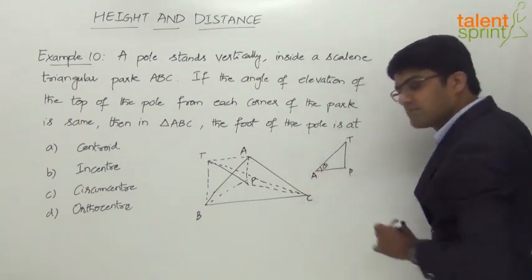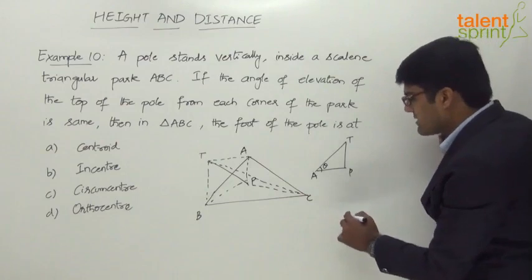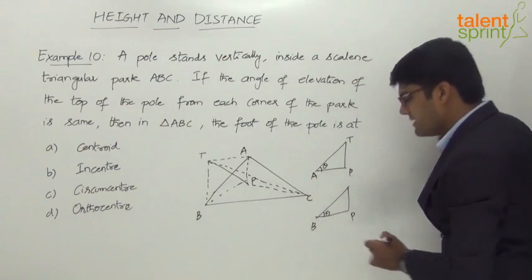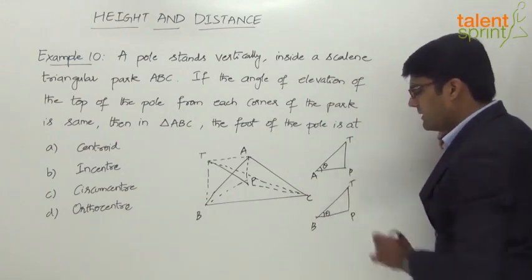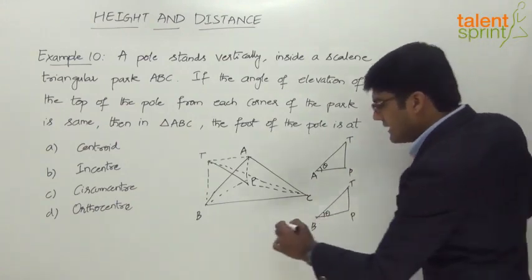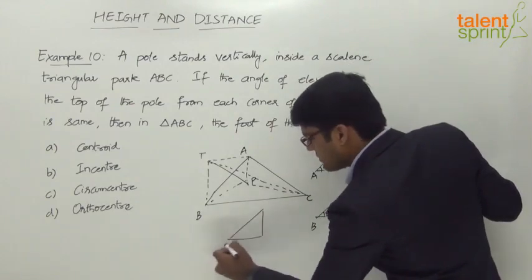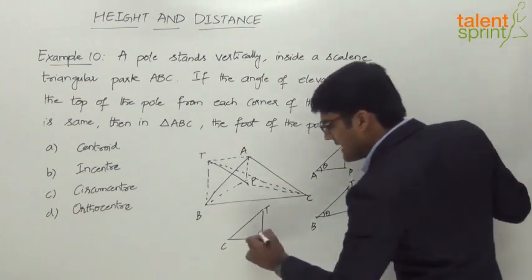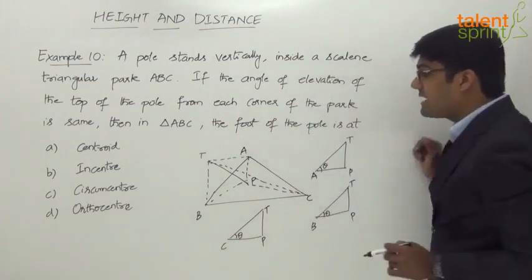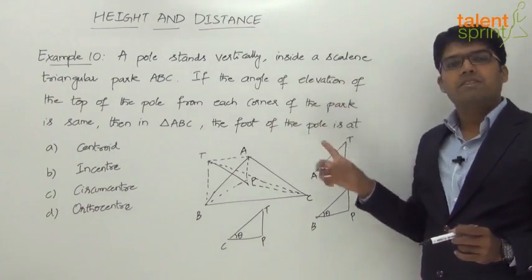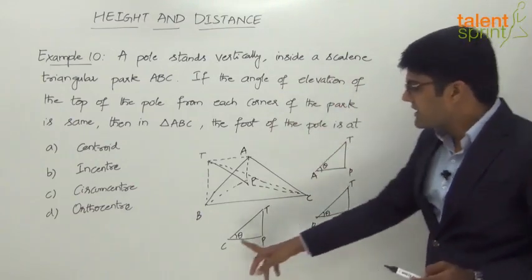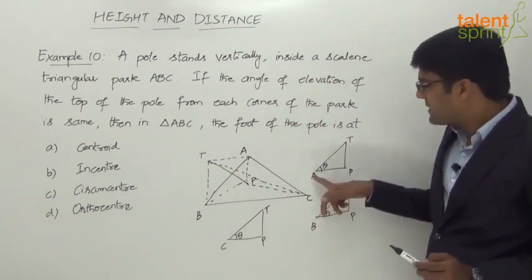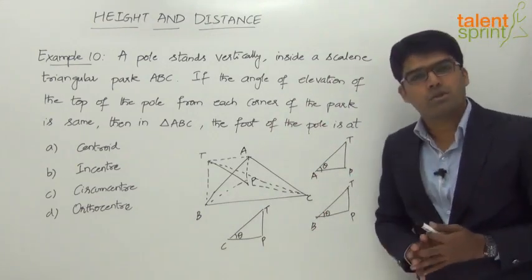In triangle APT, PT is perpendicular to AP because AP is on the ground and PT is the vertical pole, making a right angle. The angle of elevation here is theta. Similarly in triangle BPT, the right angle is at P and the angle of elevation is theta. And in triangle CPT, the right angle is at P and the angle of elevation is also theta — because the question states the angle of elevation is the same from all three corners.